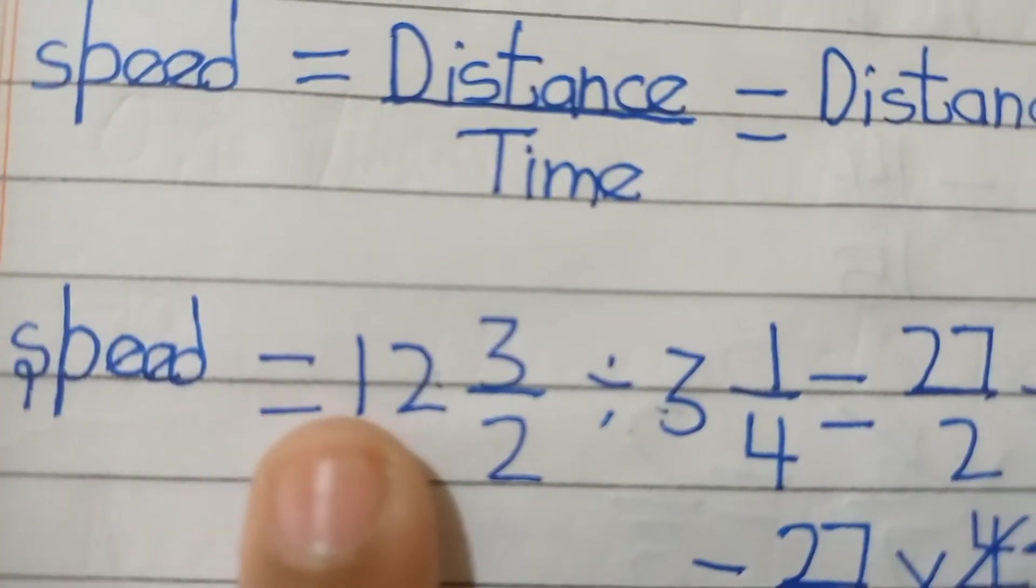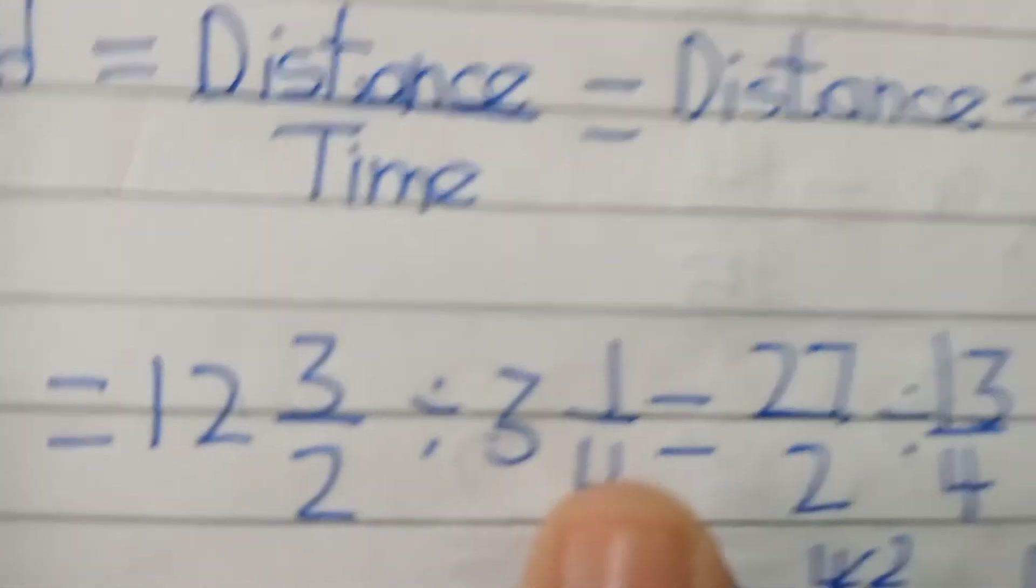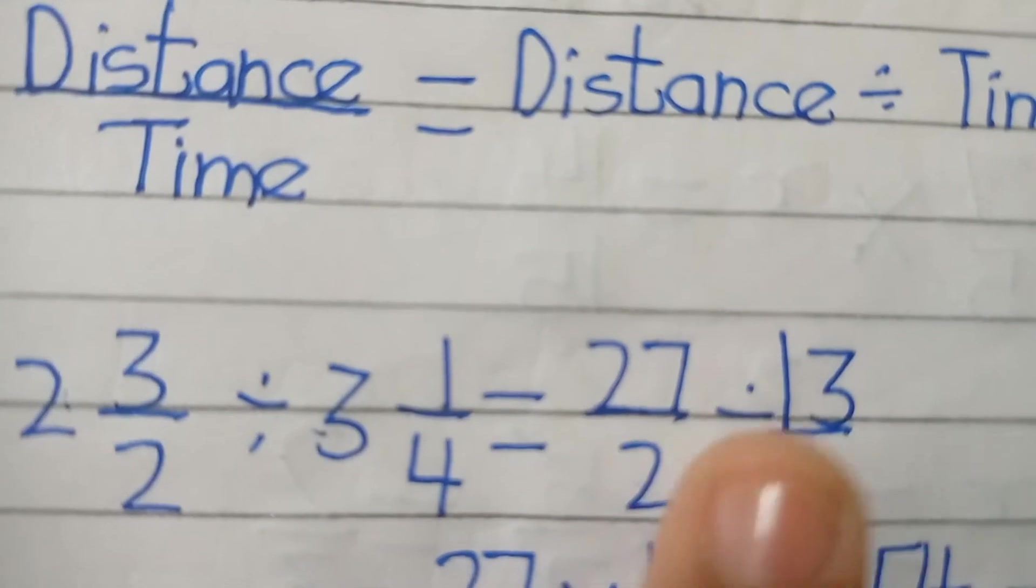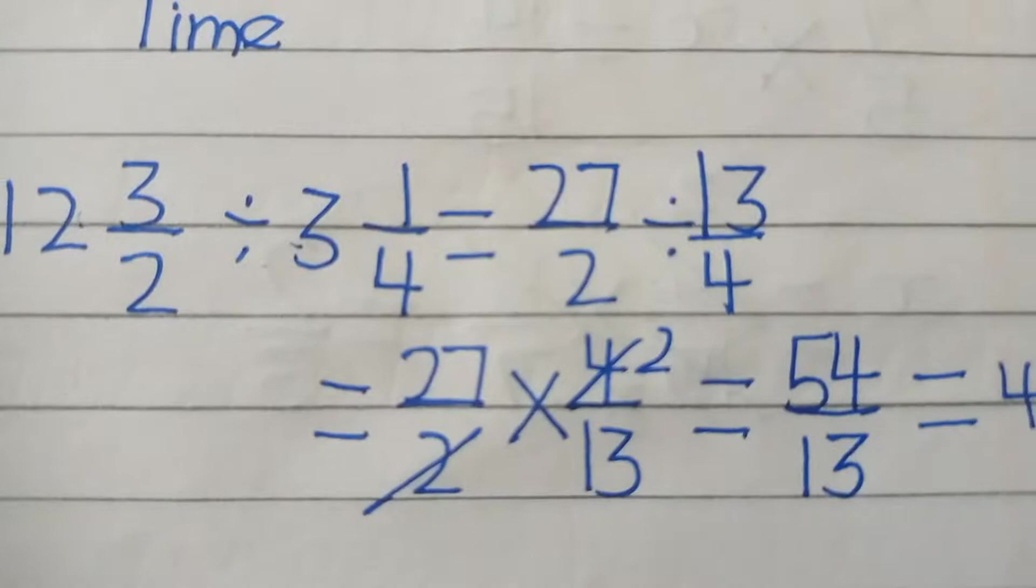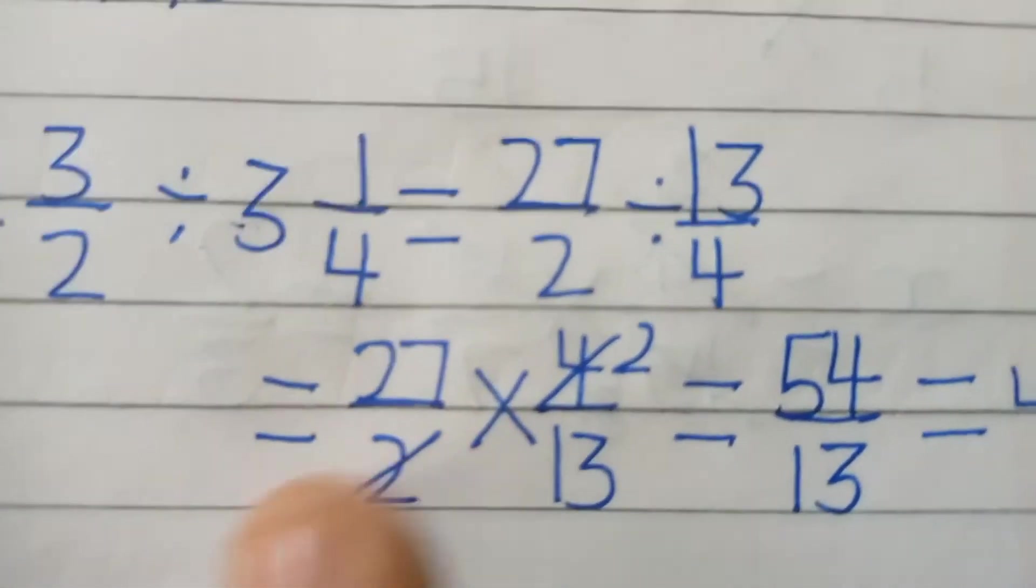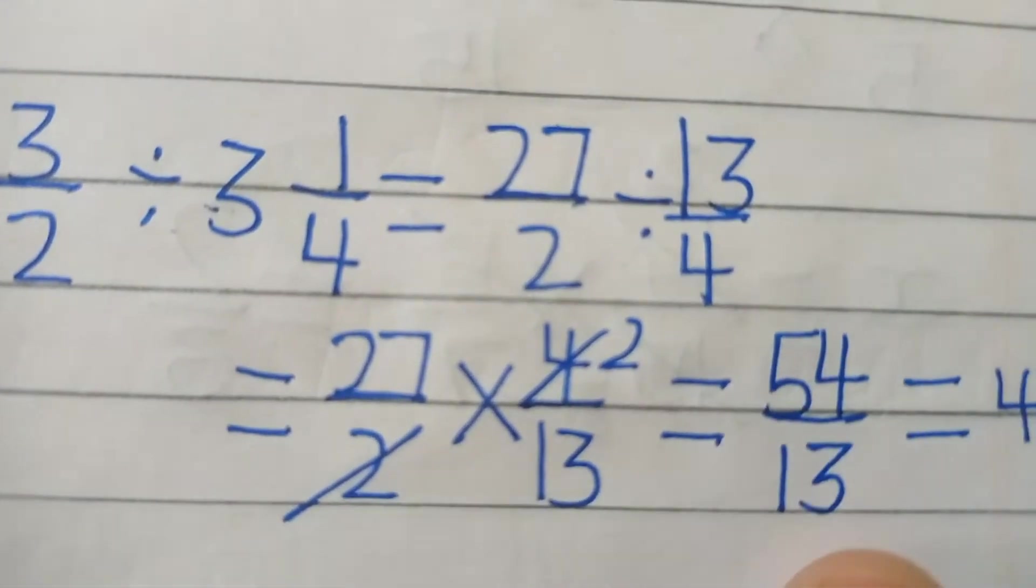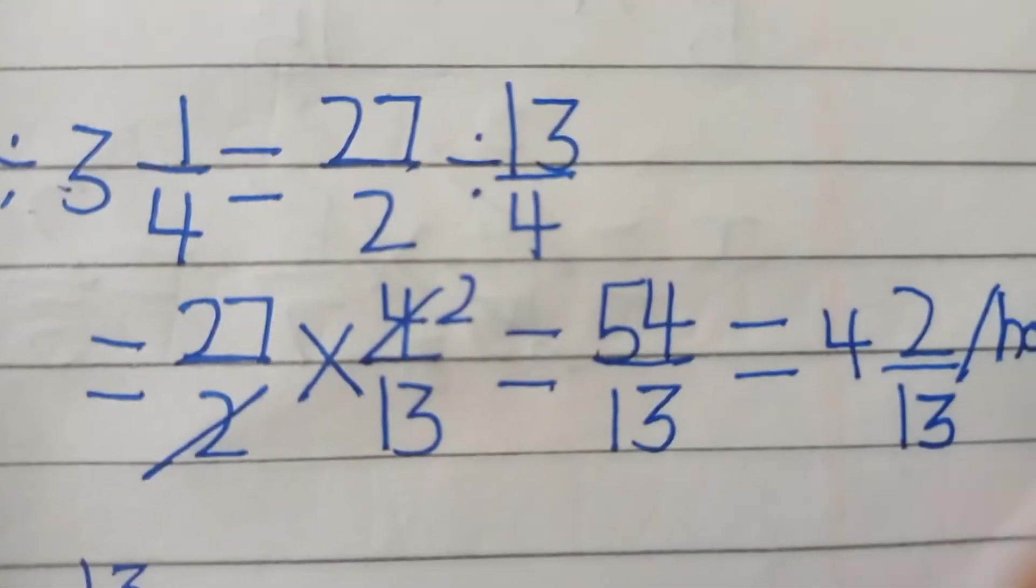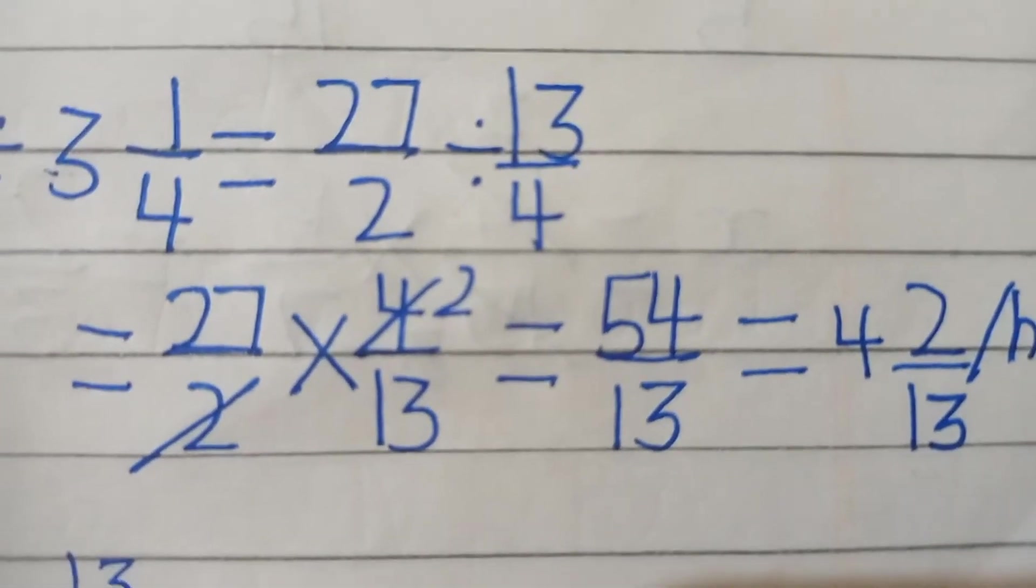So speed ho degi distance over time. So speed ka equation hoga 12 whole 3 over 2 divided by 3 whole 1 over 4. 27 over 2 divided by 13 over 4. Iska udega reciprocal kyunki divide karna ho agar rational numbers ko to hamara reciprocal ho jata hai. 27 over 2 into 4 over 13. 4 ko 2 ke saath kat kar dena hai, yahan par aayega 2. 2 into 27 kitna ho jayega 54, neeche aayega 13.